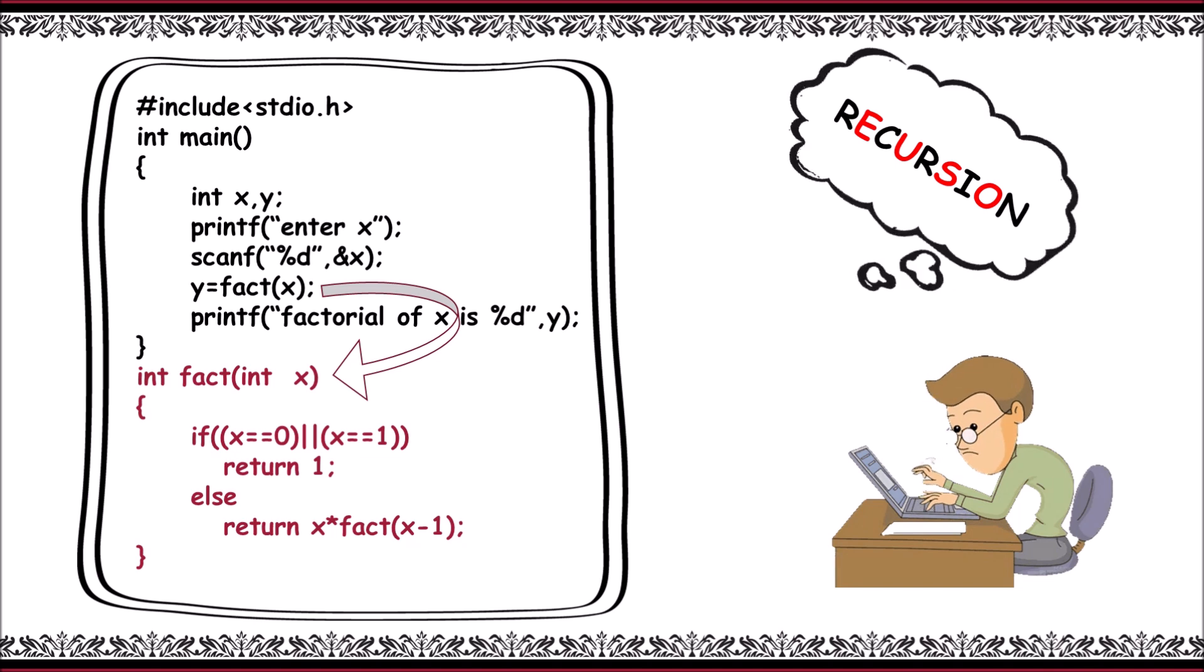It returns x into fac of x minus 1. So this process repeats until x equals 0 or x equals 1 is reached, and the result will be sent to y.